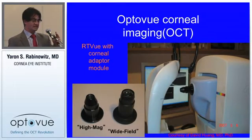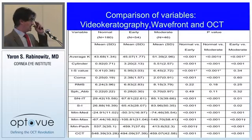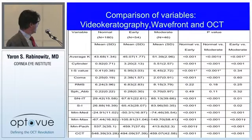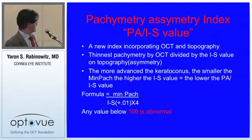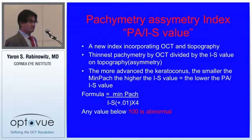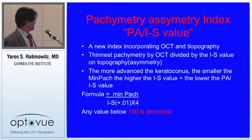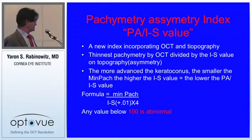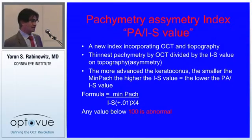Looking at multiple variables from topography, OCT, and wavefront, we found that the most statistically significant differences between groups were minimum pachymetry and the IS value. Minimum pachymetry is the thinnest point on the cornea; the IS value describes asymmetry. We developed a new PIS index combining both: thinnest pachymetry by OCT divided by (IS value + 0.1) times 4. Any value below 100 is abnormal. The more advanced the keratoconus, the thinner the cornea and the higher the IS value, so the lower the PIS value.